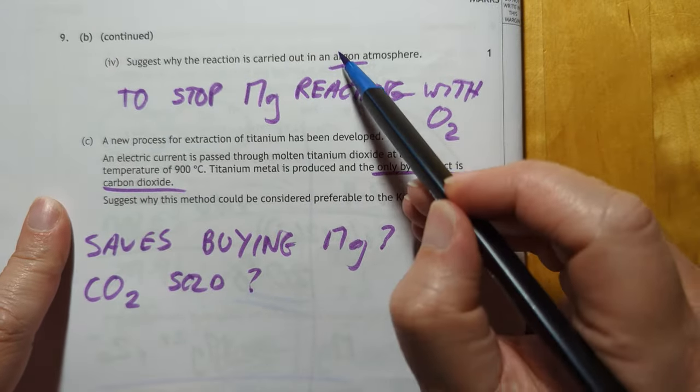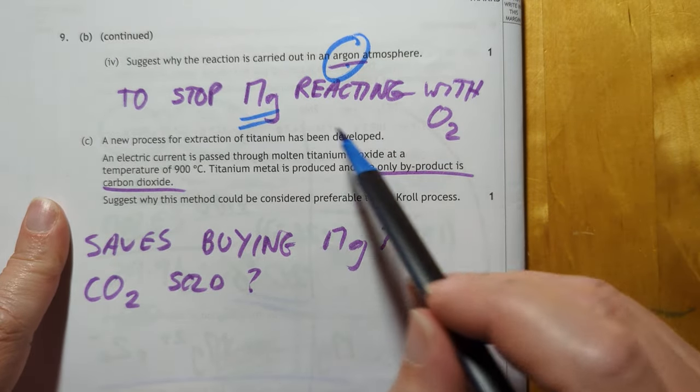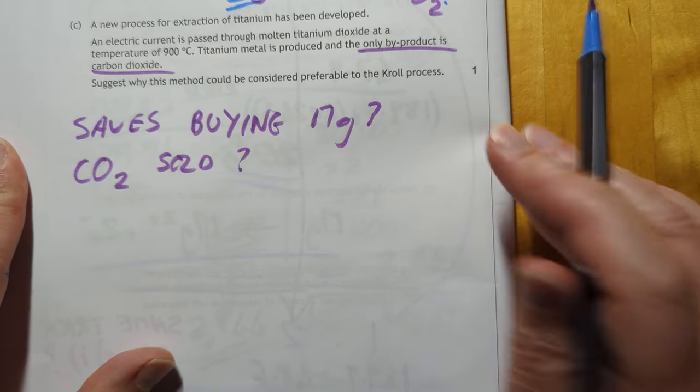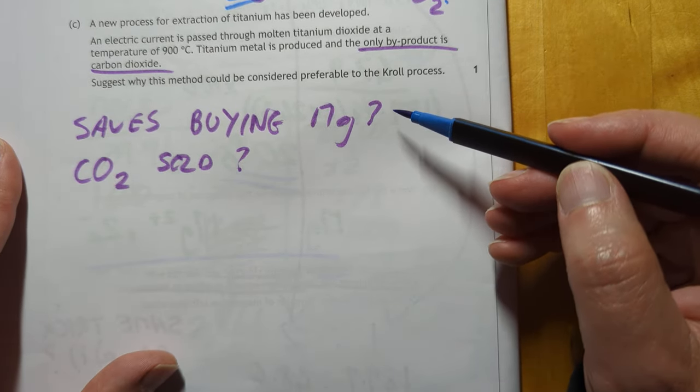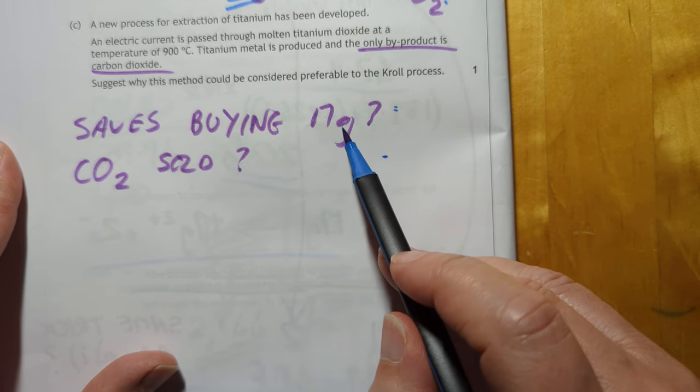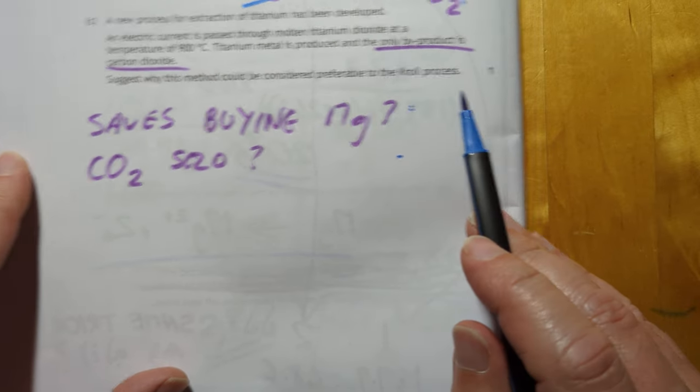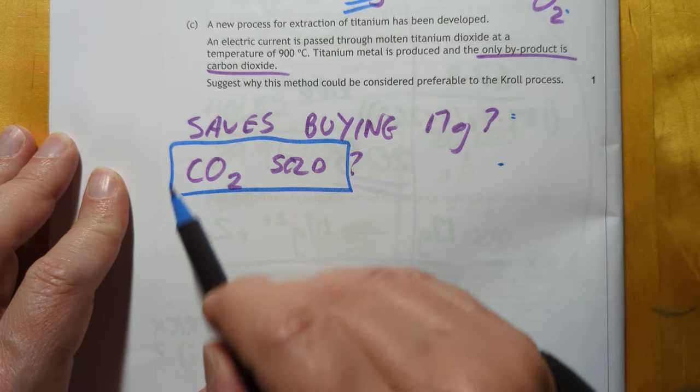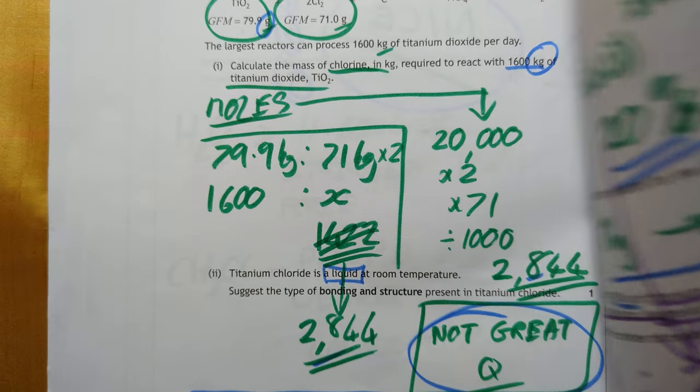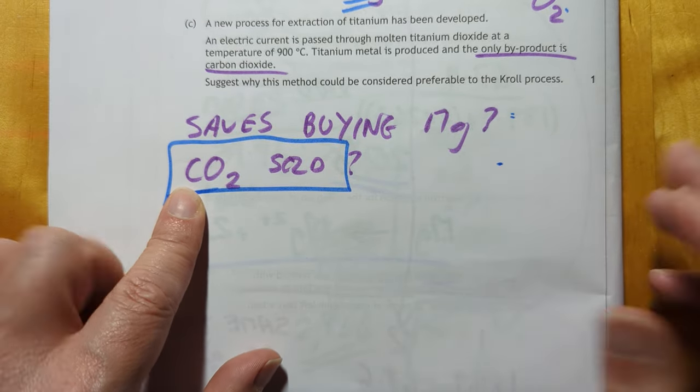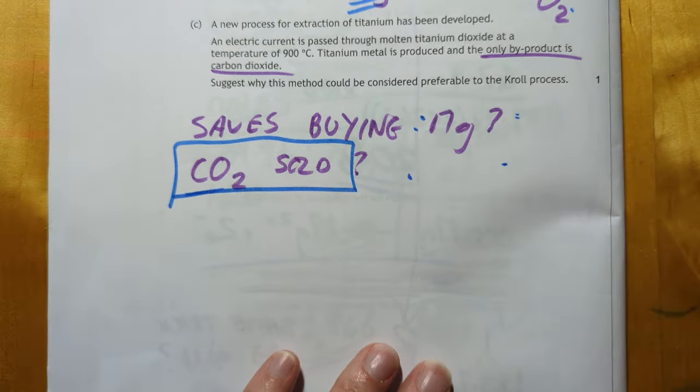Argon Atmosphere. Group 8 unreactive. I'm going to guess it's to stop magnesium reacting with oxygen in the air. This is an interesting one, more up to date one. I'm not sure it saves you buying magnesium, although electricity is not exactly cheap in the real world. Also carbon dioxide, can that be sold as a by-product with a greater value than what was a by-product magnesium chloride? Yeah maybe CO2 is more expensive than magnesium chloride on the sale. I don't know. I'm not sure honestly, not sure.